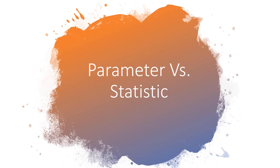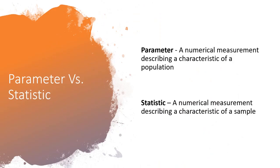Let's discuss the difference between a parameter and a statistic. First let's start with the definitions. A parameter is a numerical measurement describing a characteristic of a population. The keyword here is population — it's a number representing a population.